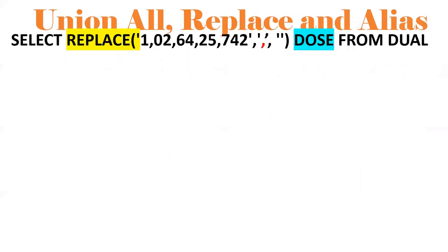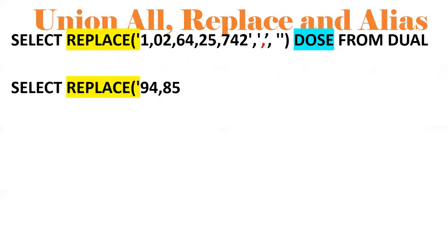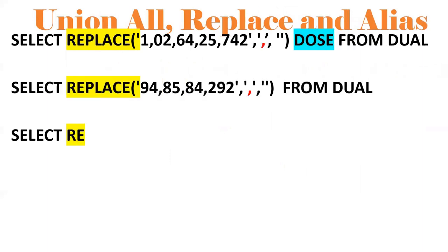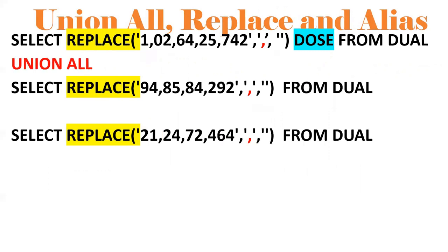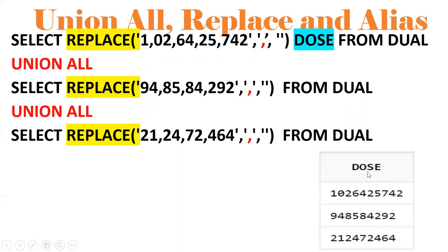Next, I add the alias concept. Same query as before but with an extra keyword — a column alias. So the output column will be named 'dose'. The commas are replaced with empty strings and we get the result with that column alias applied.